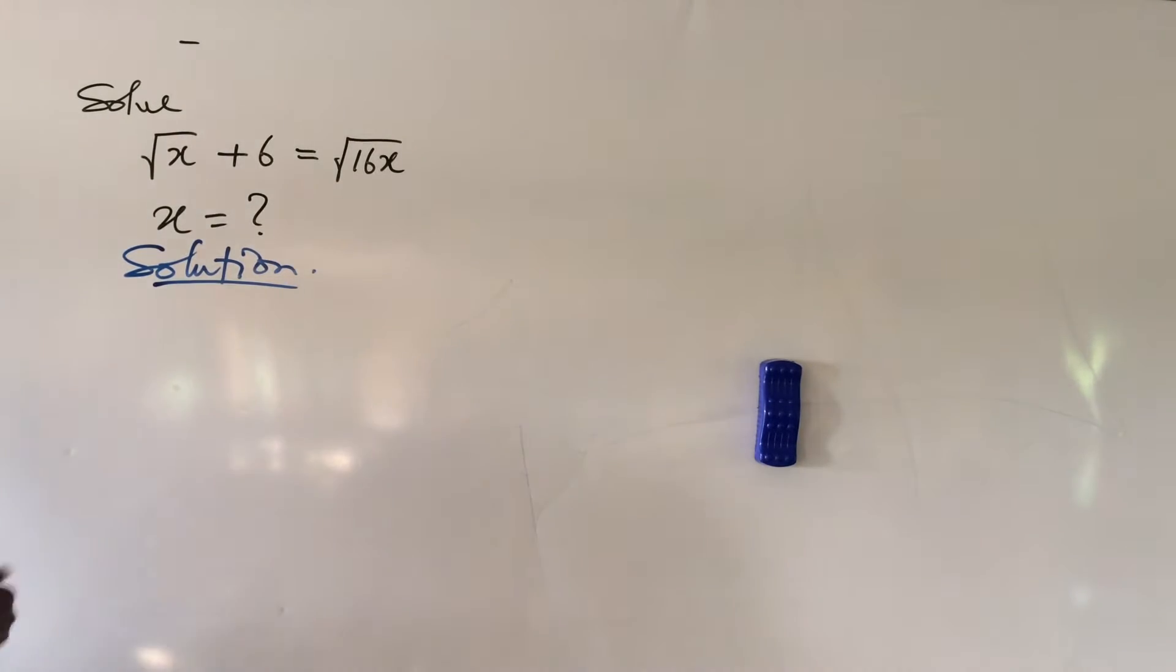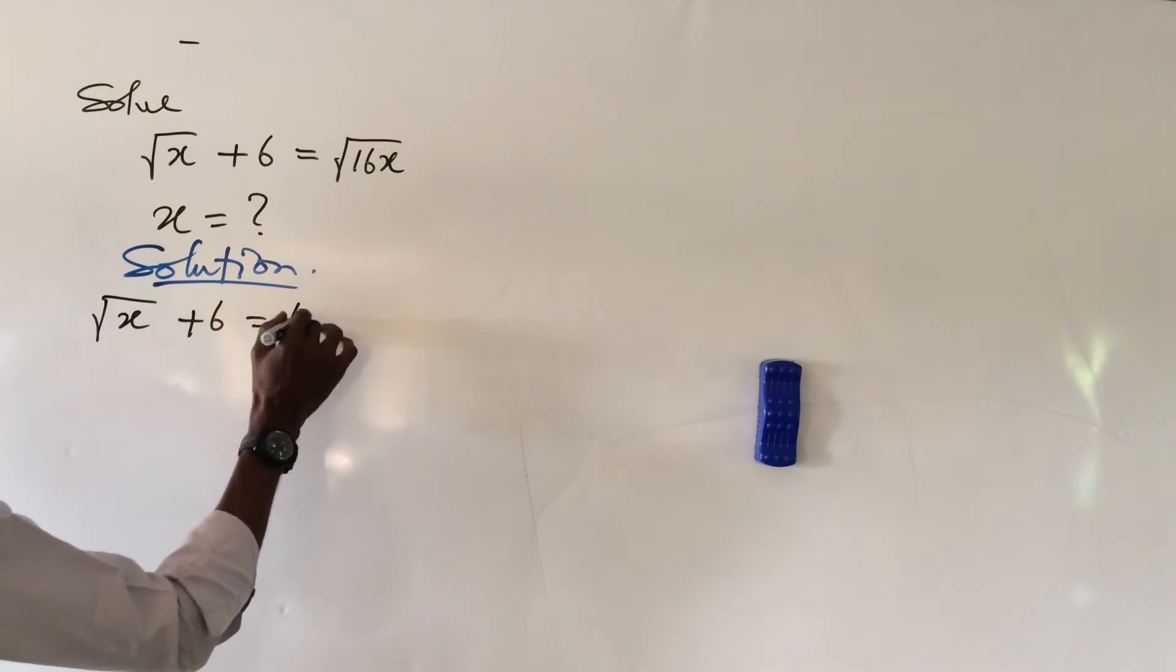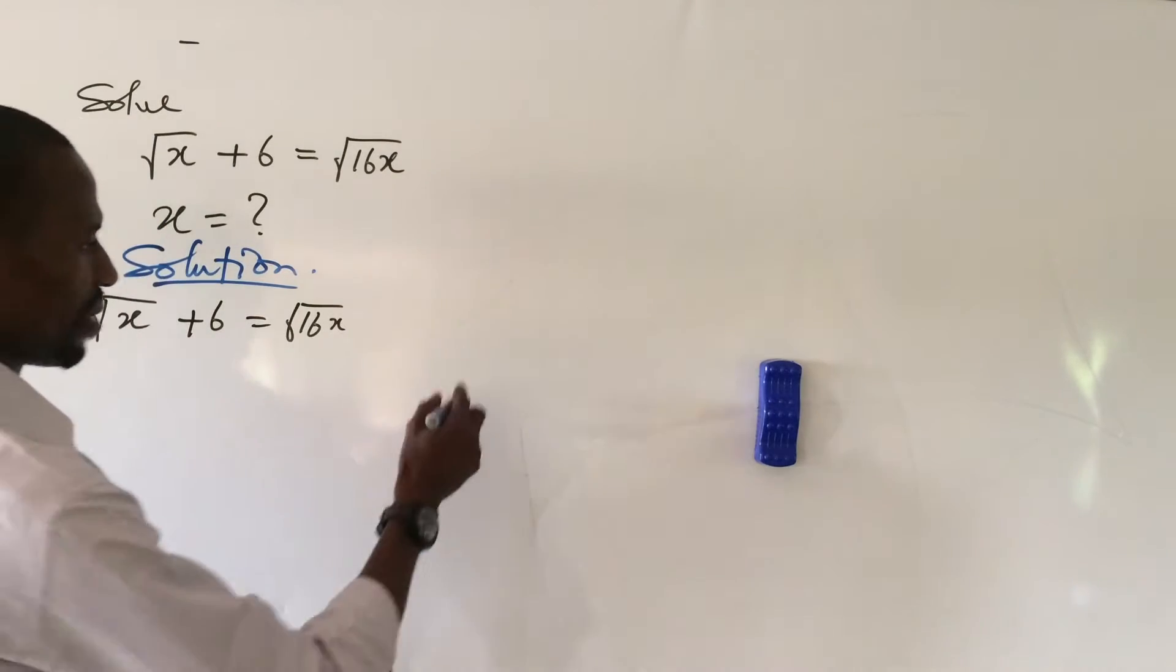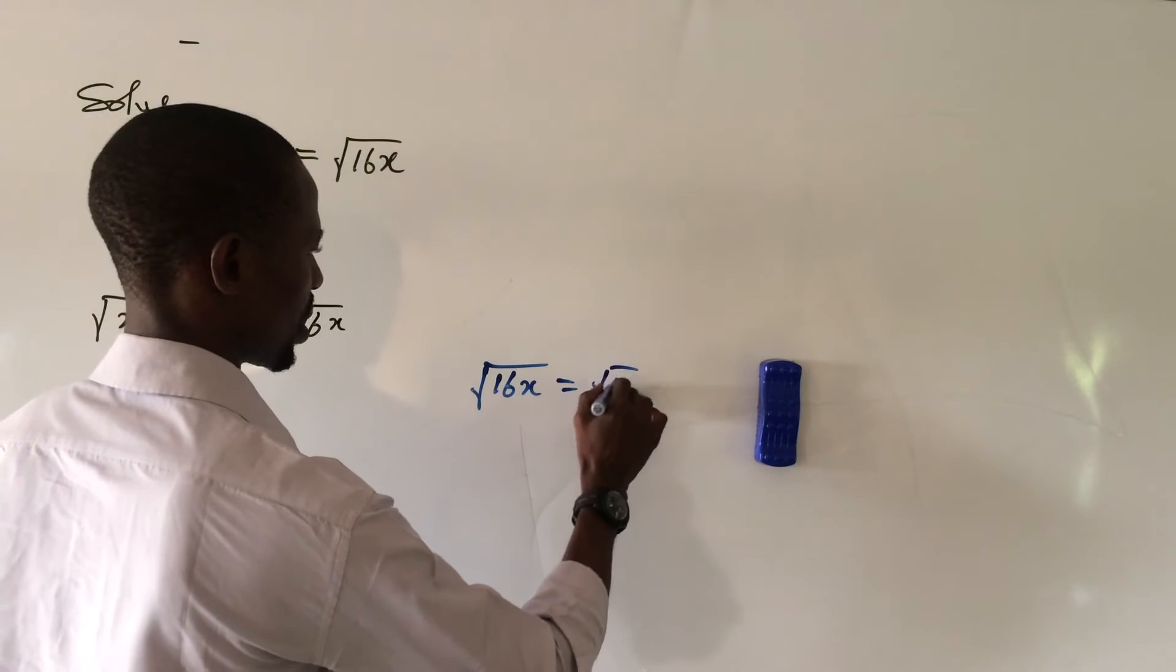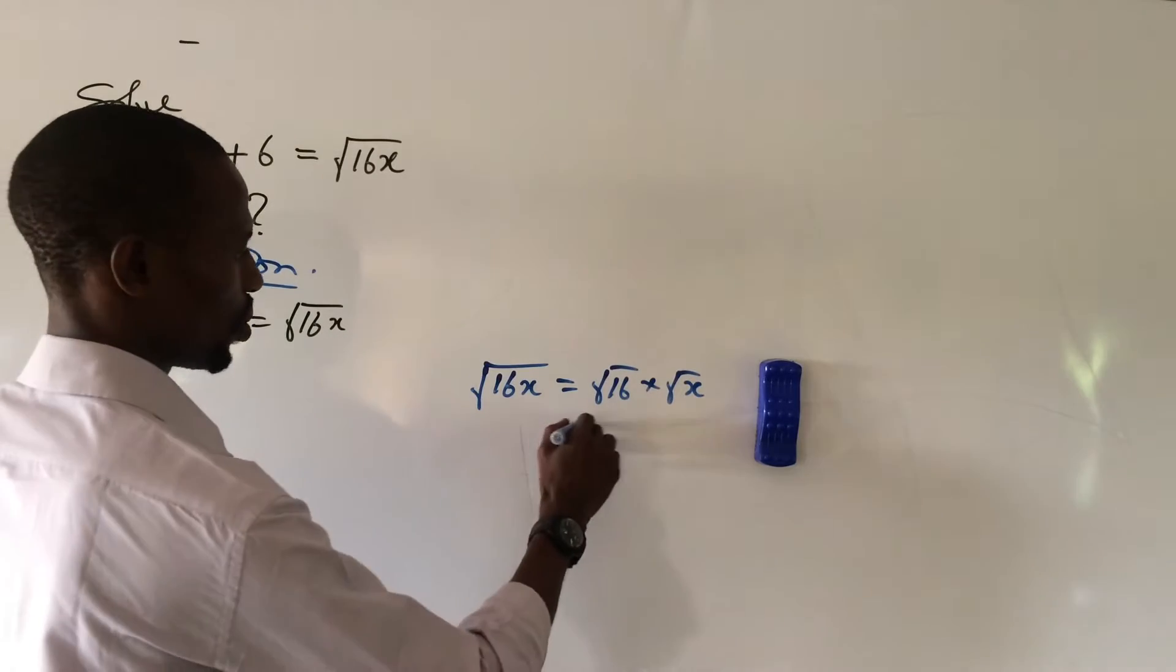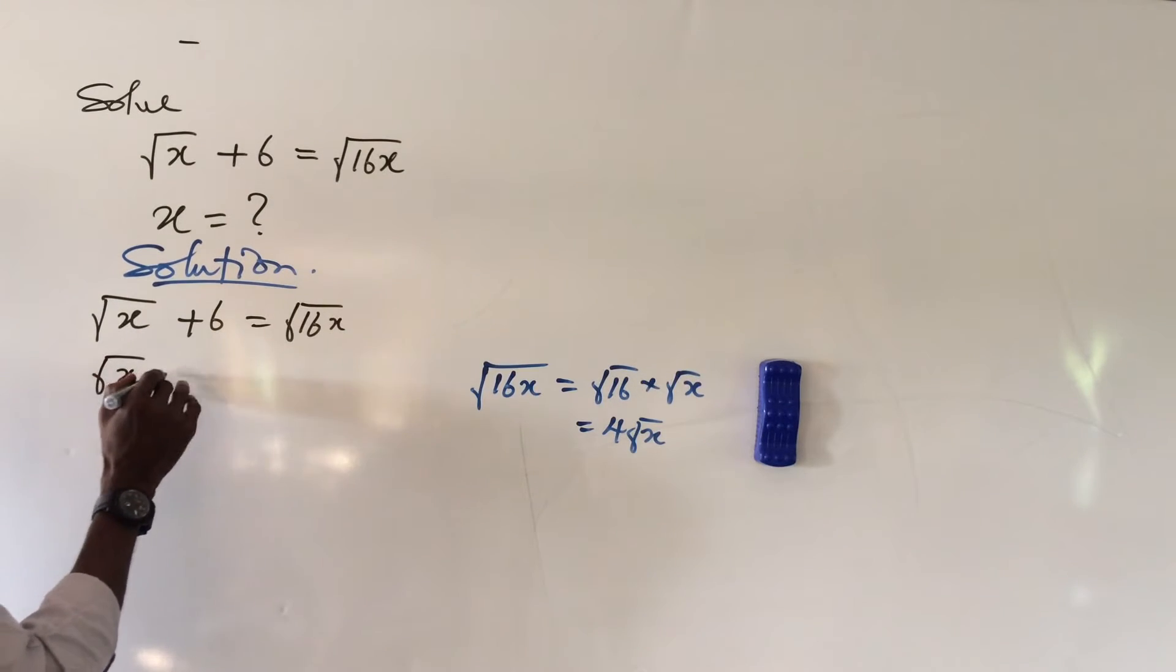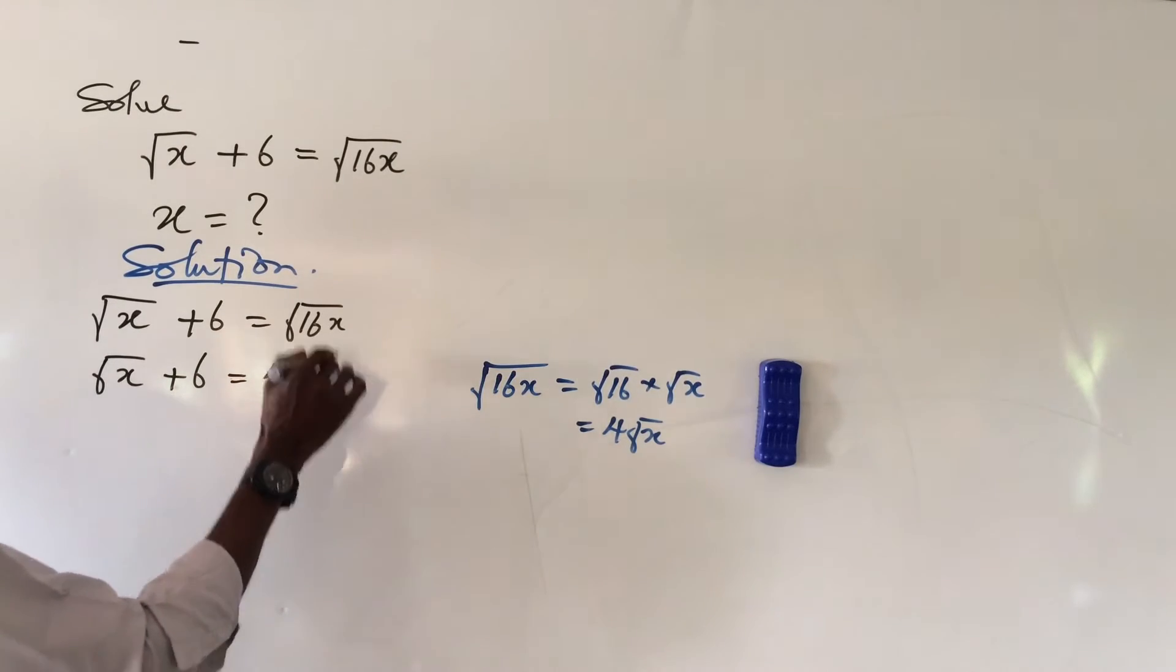Alright, the question is simple. We have here root x plus 6 equals root of 16x. Now we can split this. If we split this, we're going to have root 16x is simply root 16 times root x, and root 16 is 4. So we have it to be 4 root x. And so this equation will now give us root x plus 6 equals 4 root x. Very easy.